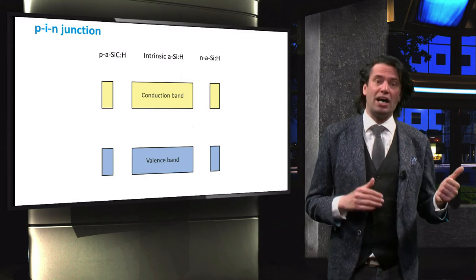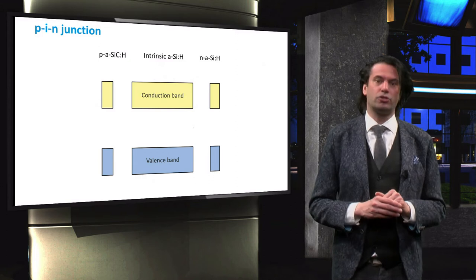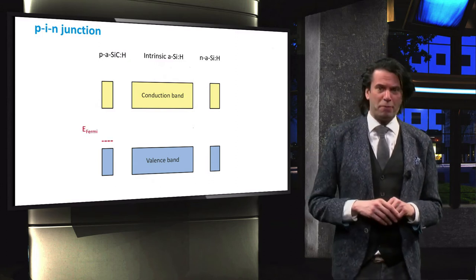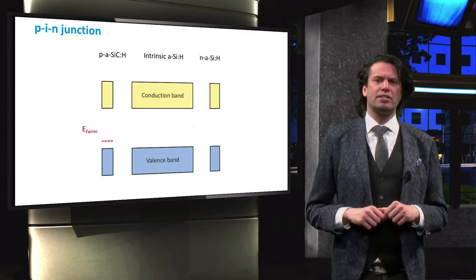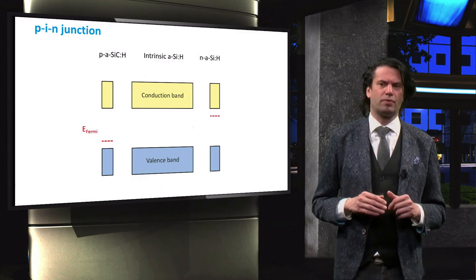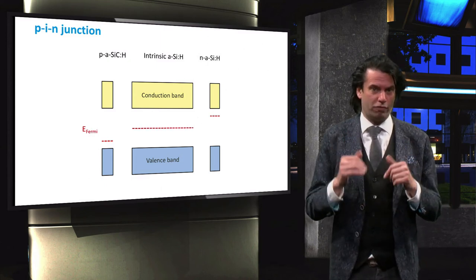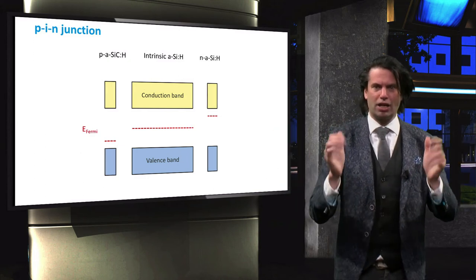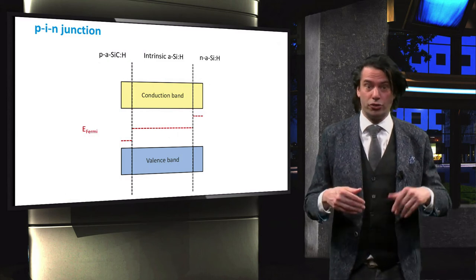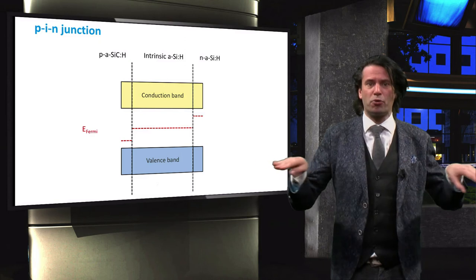This figure shows the p-i-n layers where they are not connected to each other. In this situation, the Fermi level in the p-layer is closer to the valence band, and the Fermi level in the n-layer is closer to the conduction band. For the intrinsic layer, the Fermi level is in the middle of the band gap. When the layers are connected to each other, and the system is in dark under thermal equilibrium, the Fermi level has to be the same throughout the junction.